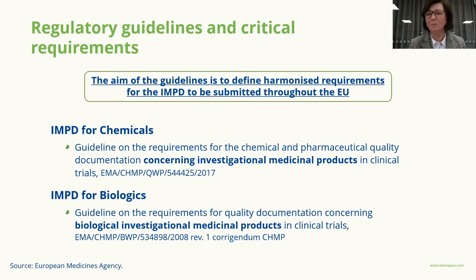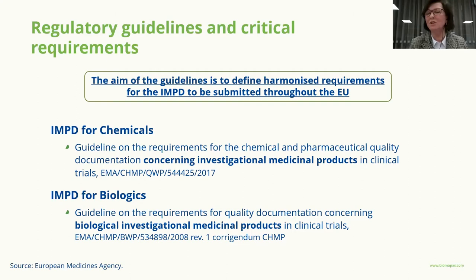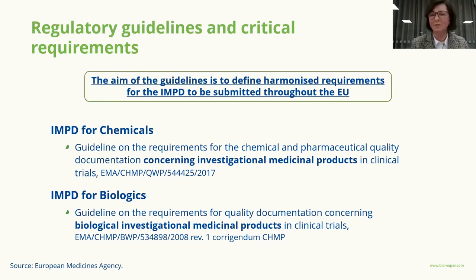There are two main regulatory guidelines: one for chemical drug products and one for biologicals. Both guidelines specify requirements for phase one or later-stage development phases two and three. I would encourage even experienced regulatory professionals to read these guidelines from time to time, as we often tend to expand descriptions while guidelines provide the exact scope. This is also very beneficial when working on both chemical and biological products.